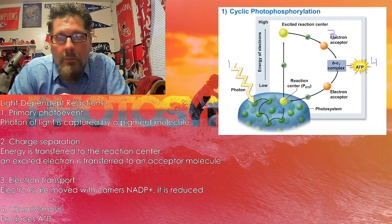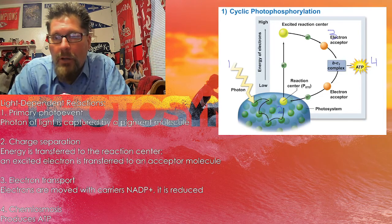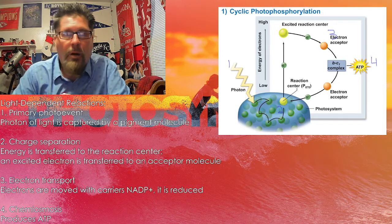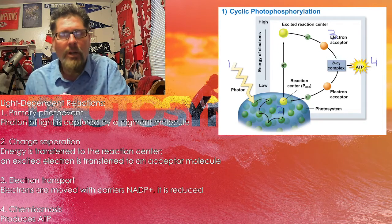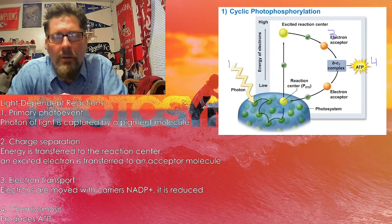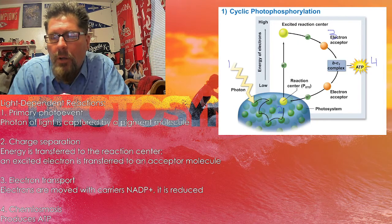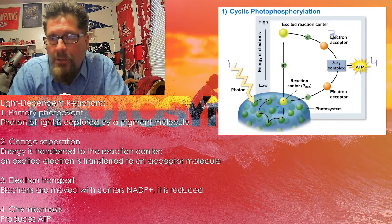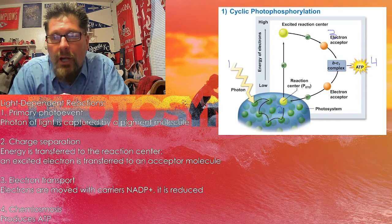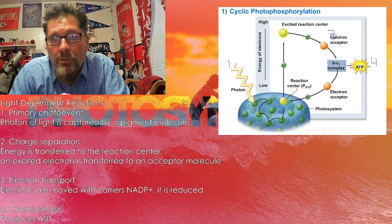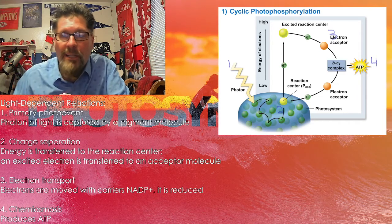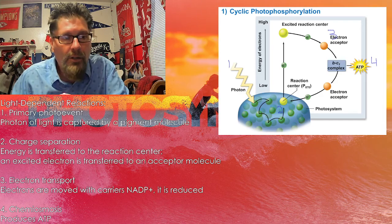Then we go through the process and get to the chemiosmosis part, where an ATP molecule is made for part four. On the next screen you'll see another diagram, but it's the idea of working through that process designed to create all the components needed for the Calvin cycle, including the ATP to provide the energy for it.